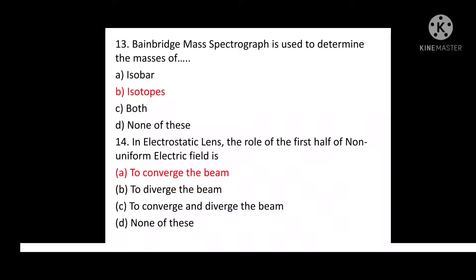Question No. 13: Bainbridge mass spectrograph is used to determine the masses of? Option A: Isobars. Option B: Isotopes. Option C: Both. Option D: None of these. Correct answer is Option B: Isotopes.